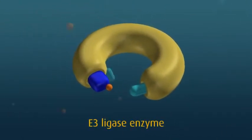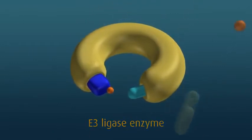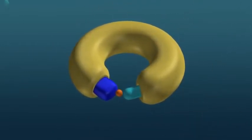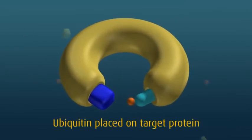The E3 enzyme acts as a platform on which the target protein substrate and the active E2 ubiquitin complex can meet and interact.